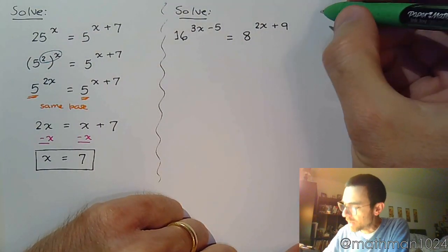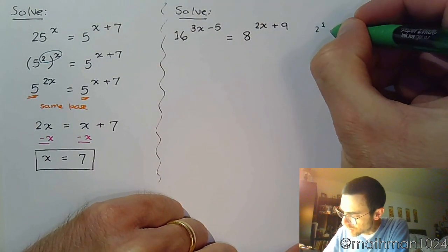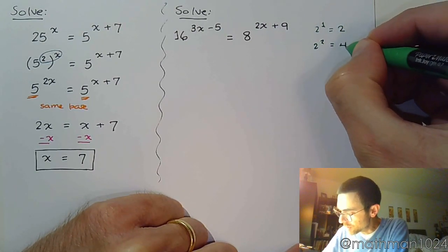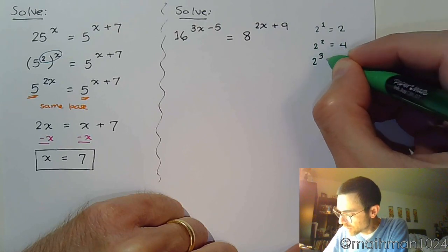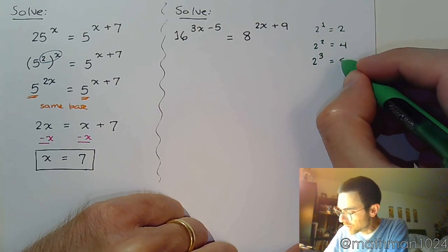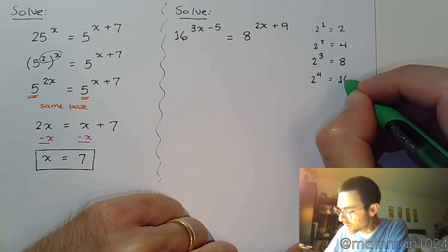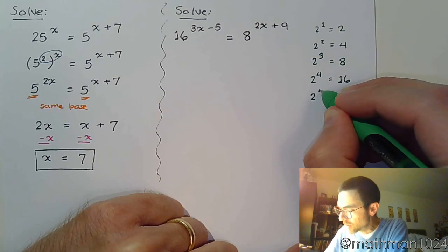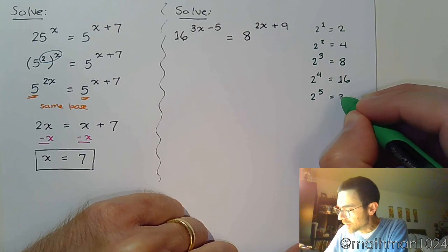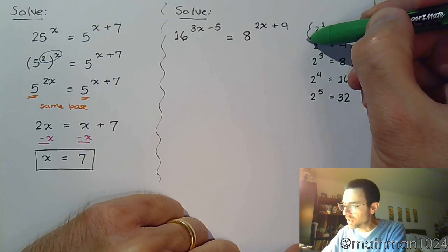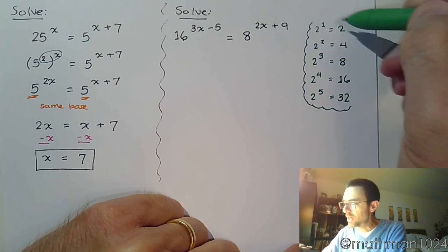If you aren't sure about this, off to the side just make a little list of your powers: 2^1 is 2, 2^2 is 4, 2^3 is 8, 2^4 is 16, 2^5 is 32. These are just some really good numbers to know, to have memorized.